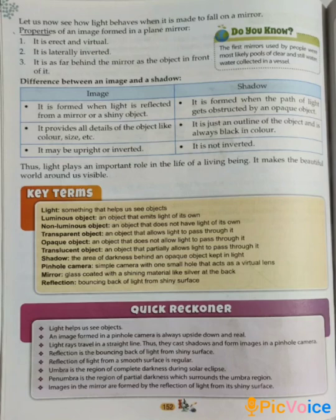Light plays an important role in the life of a living being — it makes the beautiful world around us visible. This is the chapter on Light, Shadow and Reflection. Again read this chapter at home and learn the important terms, and also practice the key terms and quick revision questions which are the important sentences of this chapter. Thank you.